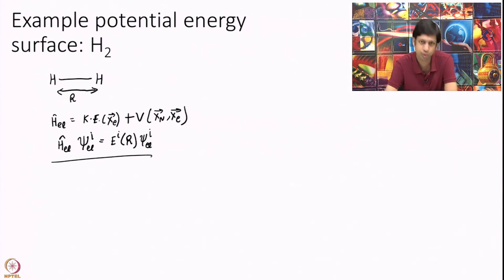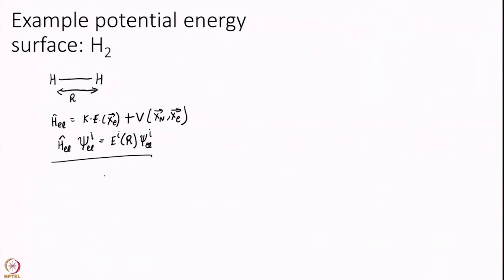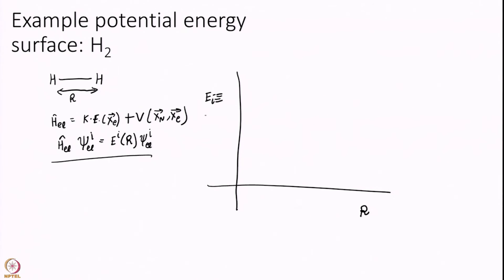This differential equation is solved for a given value of R. At the end of the day, I plot R on one axis and E_i - which is the same thing as V - on the other. For a given value of R, I solve for E_i and I get different values at different R positions.